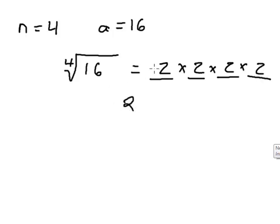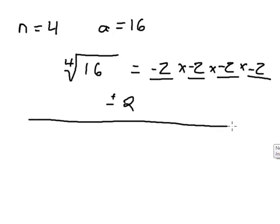Another answer is negative 2. Negative 2 times negative 2 is positive 4, times negative 2 is negative 8, times negative 2 is positive 16. So our answer will be plus or minus 2. It's going to work that way whenever you're taking an even root — you'll have plus or minus the answer.